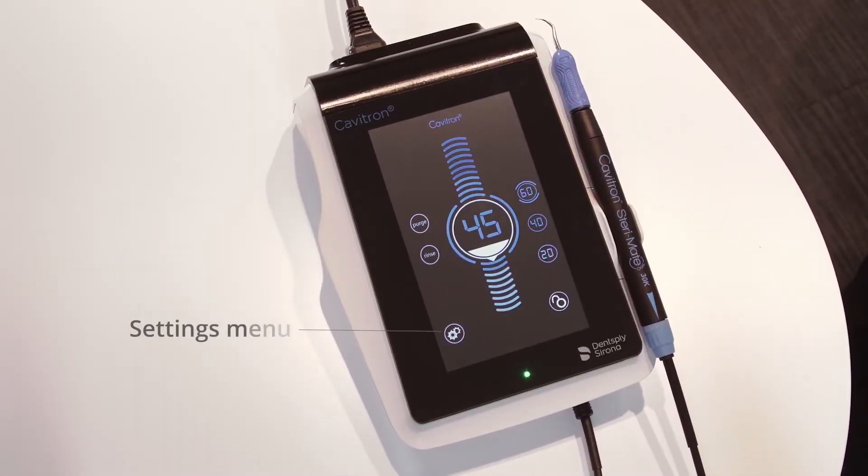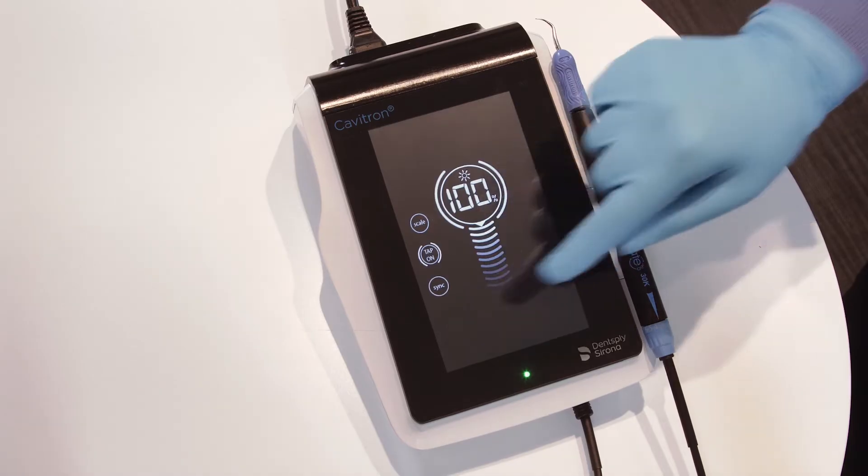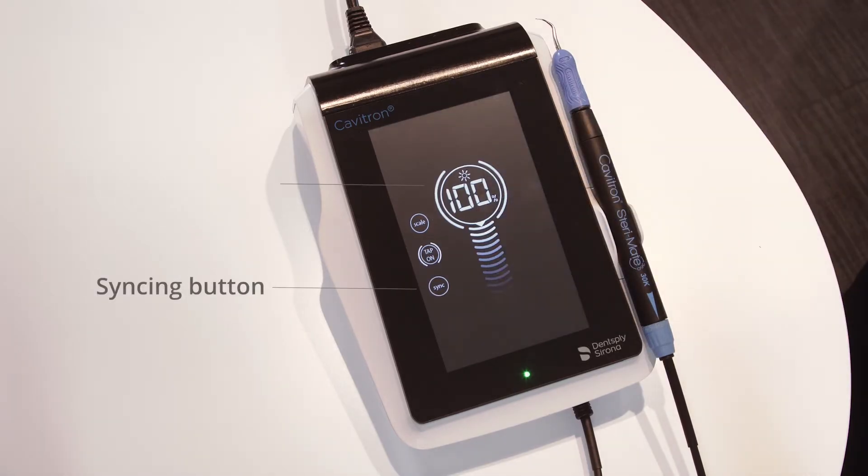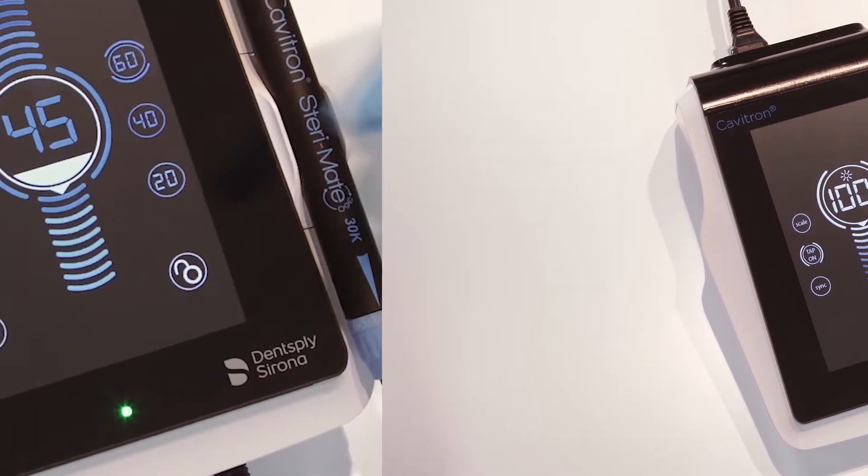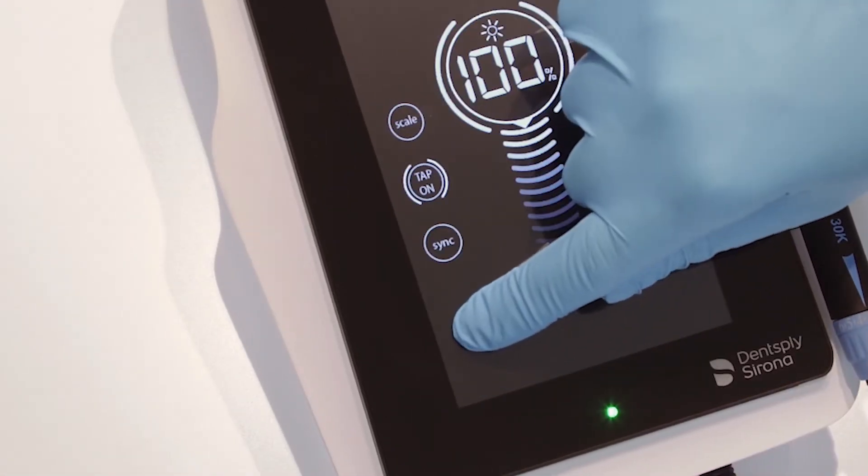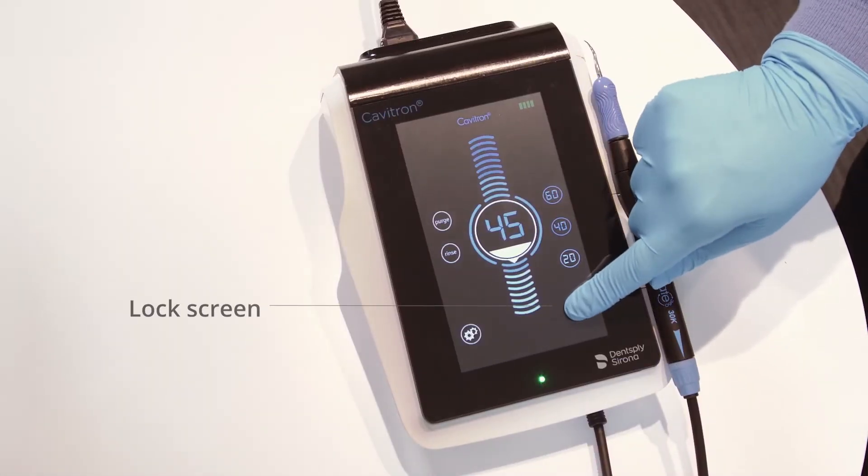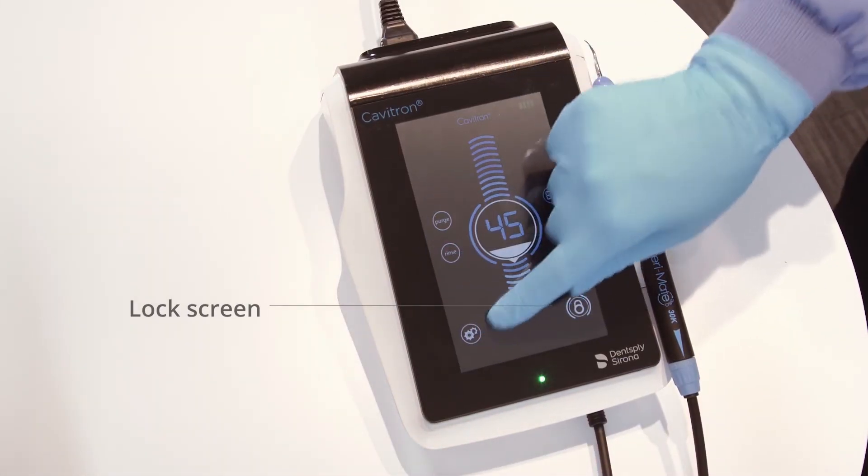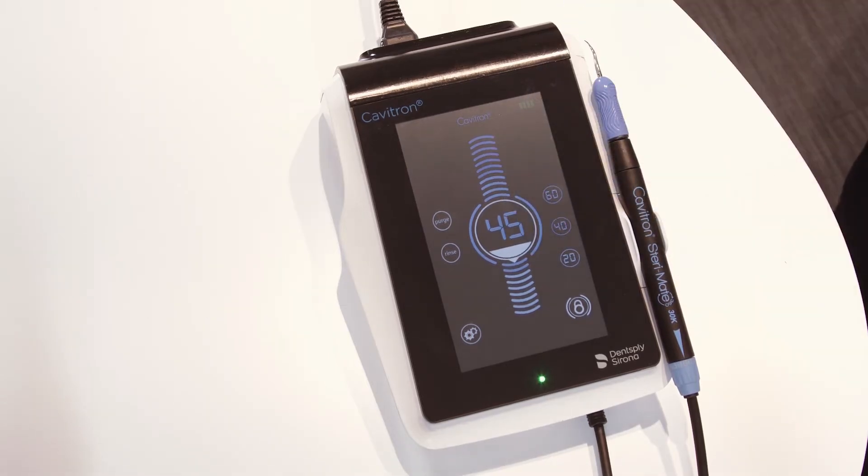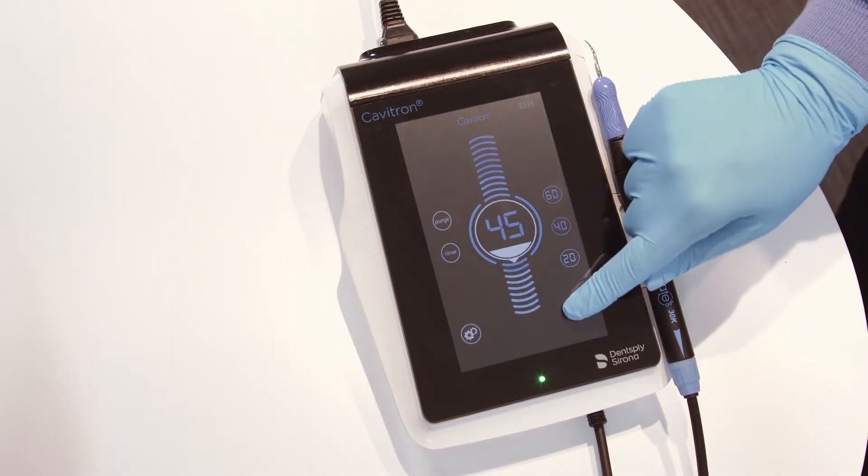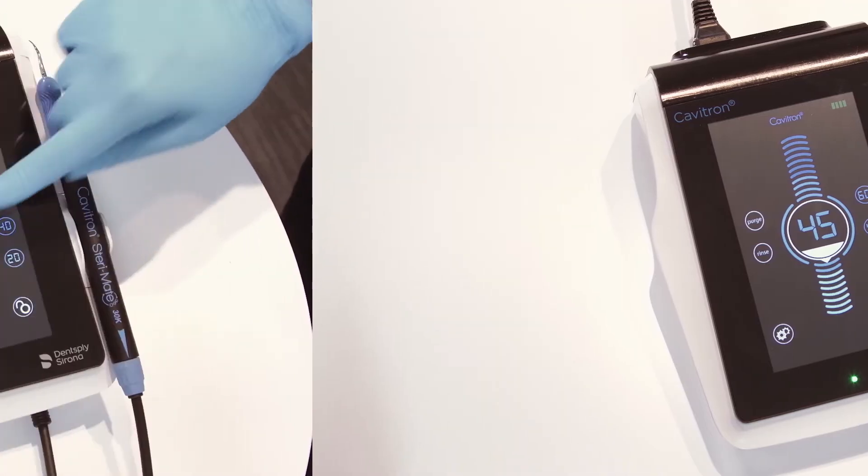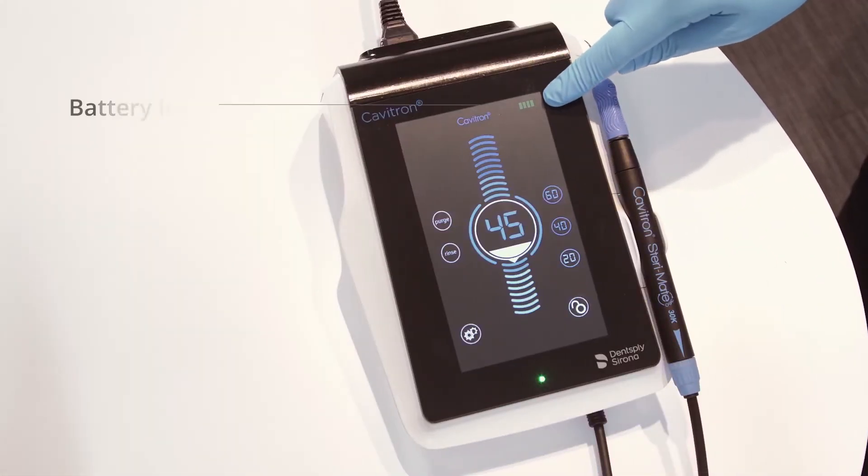The settings icon accesses the menu allowing for syncing of the foot pedal to the unit, brightness setting and the tap on technology foot pedal control setting. To access the settings menu, press and hold the icon for two seconds. The lock icon is pressed and held for two seconds to lock the screen, disabling adjustment of any parameter until the unlock icon is pressed and held for two seconds. The upper right corner displays the battery level of the foot pedal. All of these features are detailed in the directions for use.